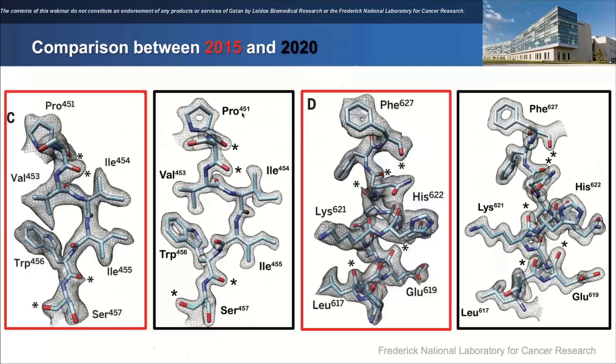Just to give a comparison: this is the 2020 structure from the CryoArm versus the 2015 structure published six years ago. The difference is very clear — it's a 2.2 versus 1.9 angstrom improvement, a 0.4 angstrom gain. You can see better definition for holes and rings, less noise in the new map, and the density hugs the model almost perfectly. There are also some protrusions in the density for the 2020 map coming near the atoms.